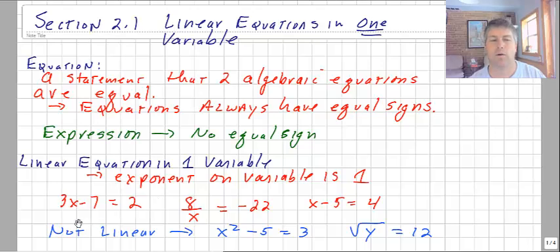So if you look below here, I have a variety of equations: 3x minus 7 equals 2, 8 over x equals negative 22, x minus 5 equals 4. These are all equations.